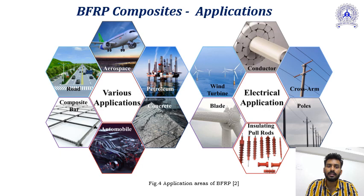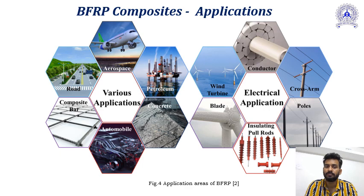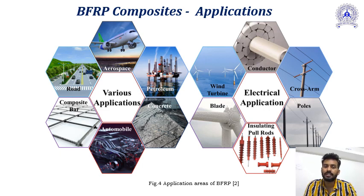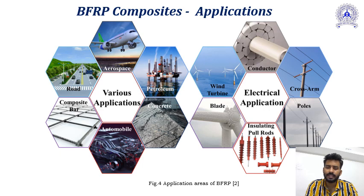These are the entire application ranges of BFRP composites. Various applications include road, aerospace, petroleum, concrete, automobile, and composite bar. Along with those, there are electrical applications such as wind turbines, conductors, cross arms, poles, insulating pole rods, and blades. So BFRP composite has a wide range of applications.